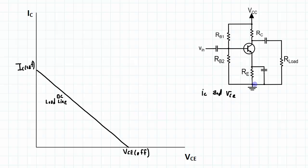From an AC point of view we are no longer looking at a circuit like this because we don't need the DC source voltage. We are assuming that the capacitors are set so that they become shorts at the AC operating frequencies, and so we can represent the circuit in the AC model.